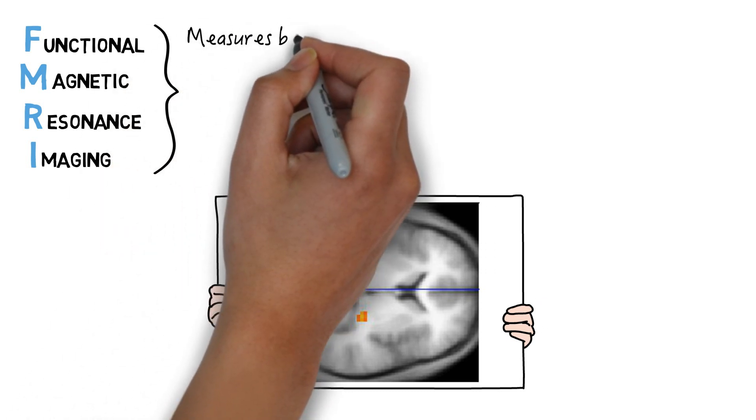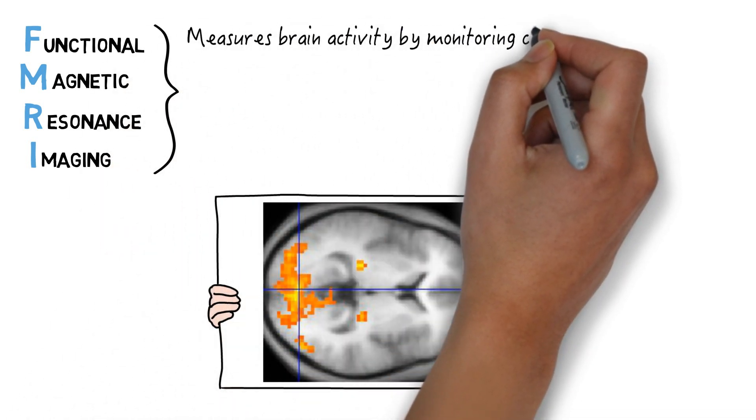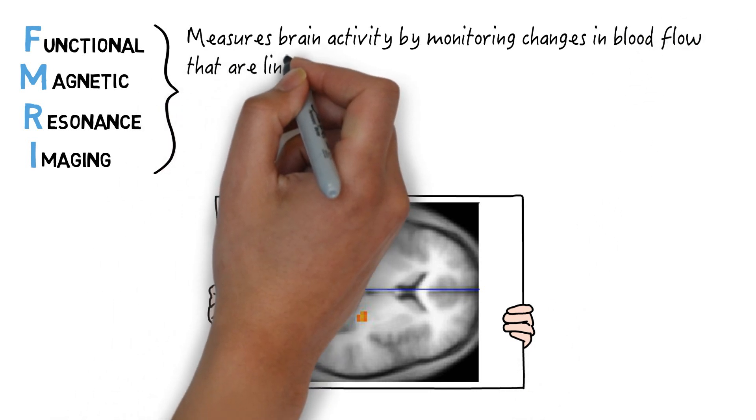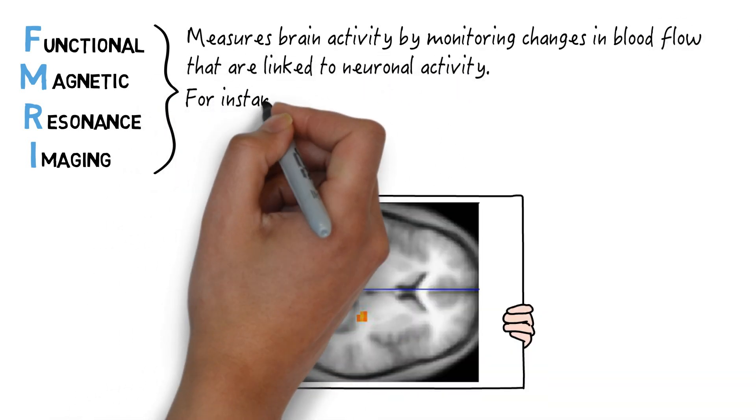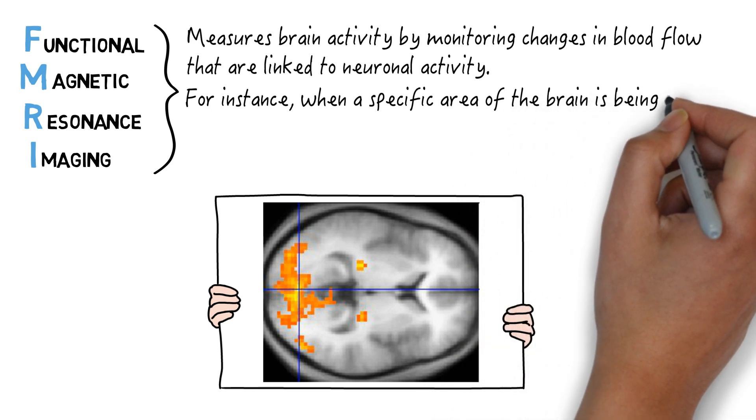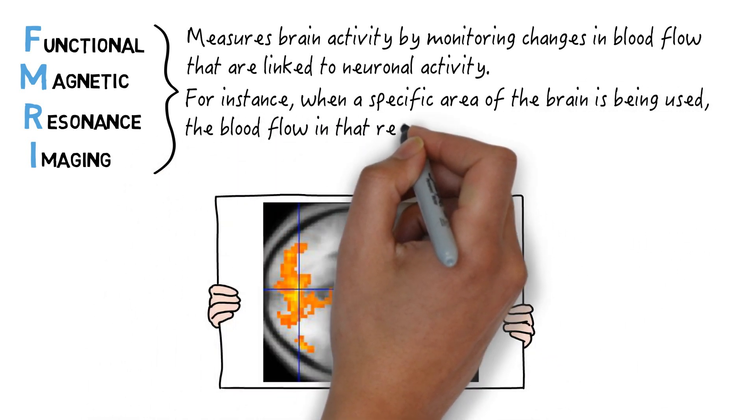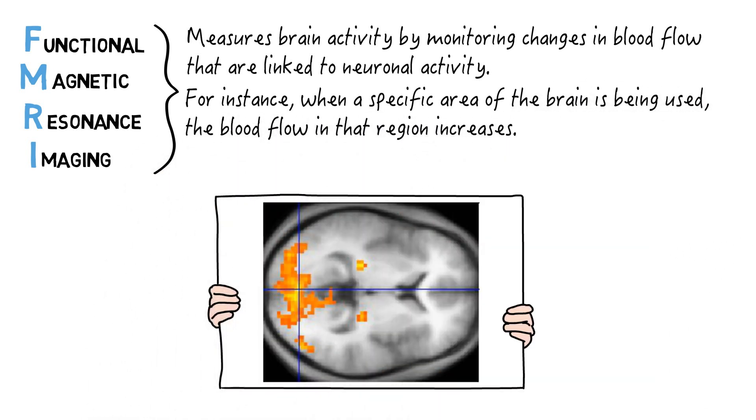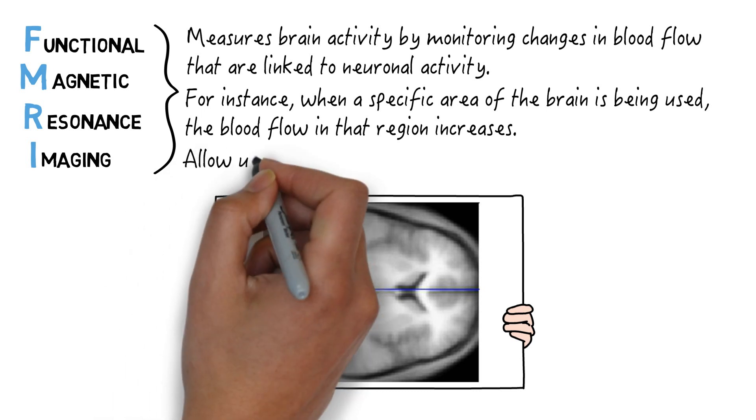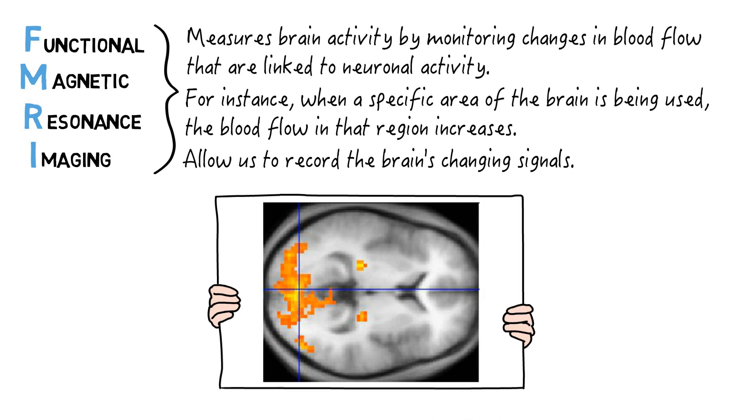An FMRI measures brain activity by monitoring changes in blood flow that are linked to neuronal activity. For instance, when a specific area of the brain is being used, the blood flow in that region increases. All you need to know is that FMRIs allow us to record the brain's changing signals.